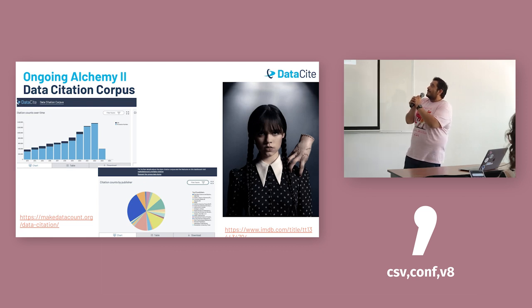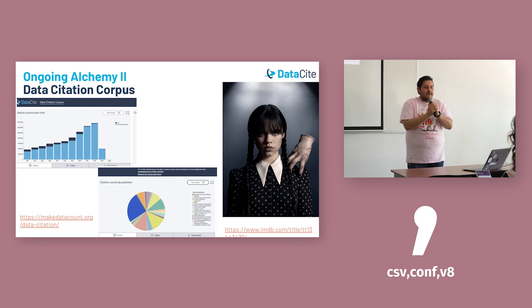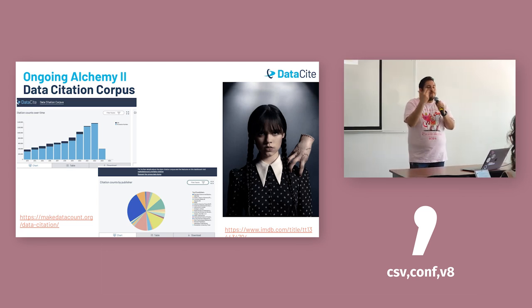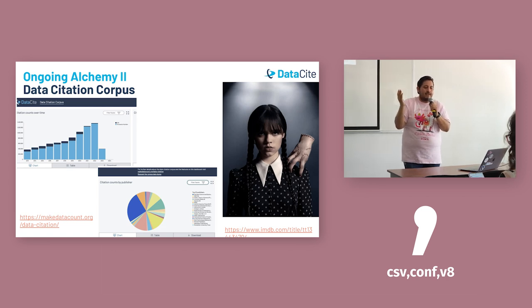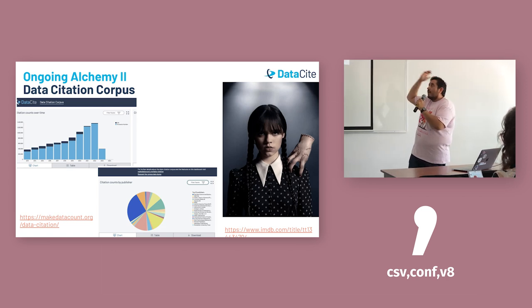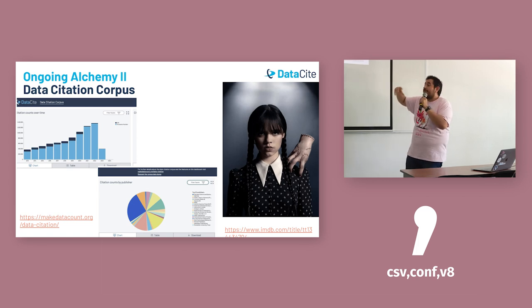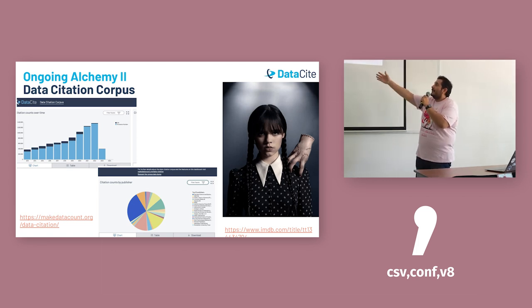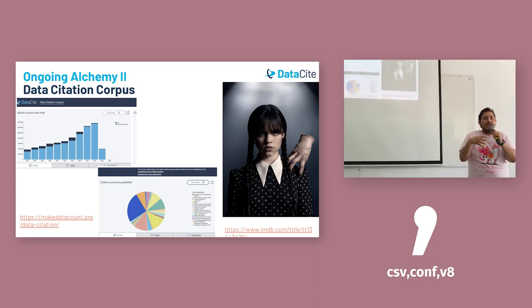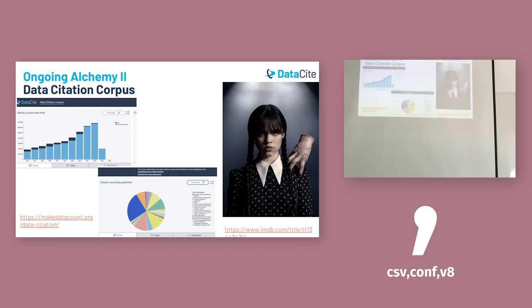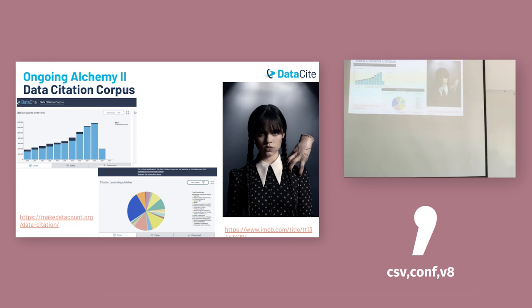One of our initiatives is the Data Citation Corpus — a trusted central aggregate of all data citations for further understanding of data usage and to advance meaningful data metrics. We also want to track all the different citations that we have, and these tools can help the community better understand the impact of dataset citations and all the elements we are providing.